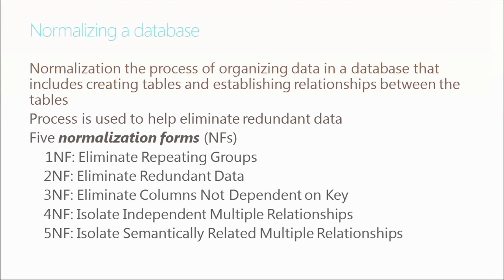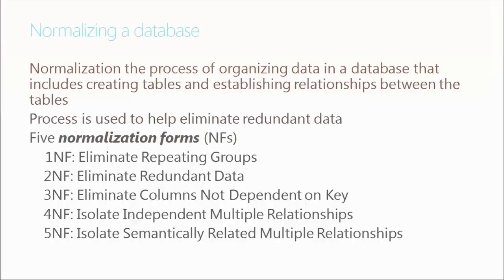If you look at a spreadsheet with thousands of rows and 30, 40, or 50 columns, you'll see a lot of redundancy, and normalization helps eliminate that. By default, there are five normalization forms: first is eliminating repeating groups; second is eliminating redundant data; third is eliminating columns not dependent on the key; fourth and fifth involve isolating independent and semantically related multiple relationships. We're not going to drill into four and five — most databases are designed to third normal form, and that's what we'll focus on.